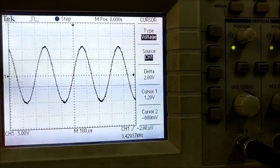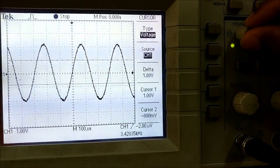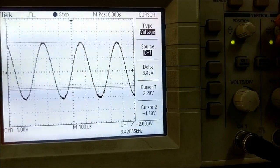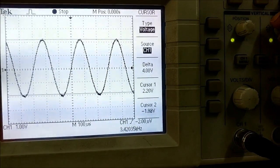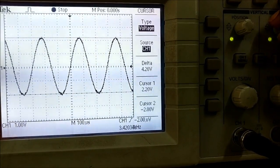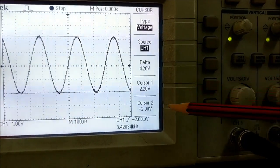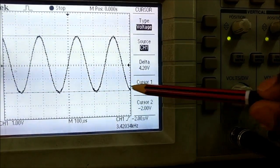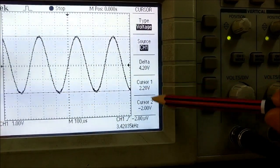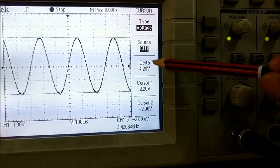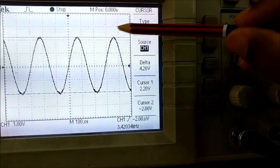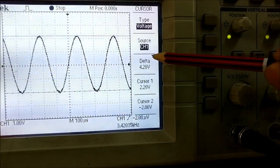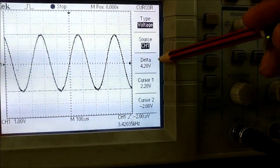If you select voltage, two cursors will appear. To check the voltage, move cursor 1 to the peak top and cursor 2 to the lowest part. The delta means the difference between the two cursor voltages, which is 4.20 volts, the peak to peak voltage observed using this cursor.